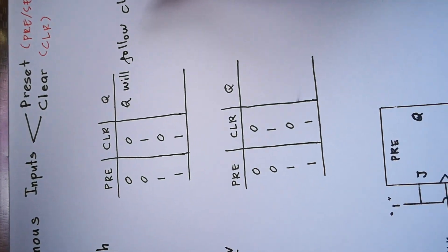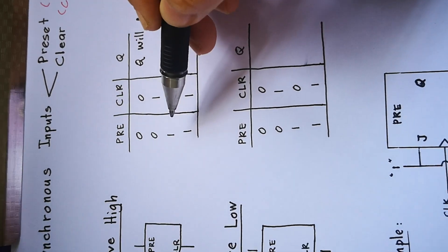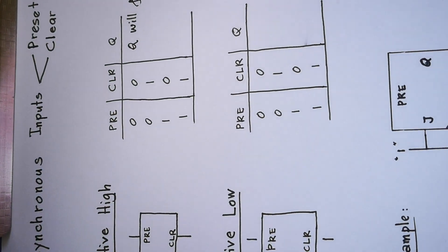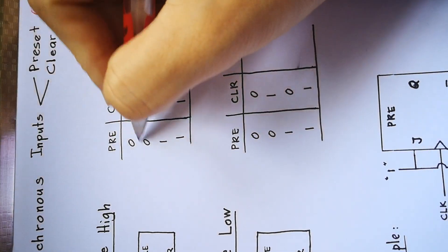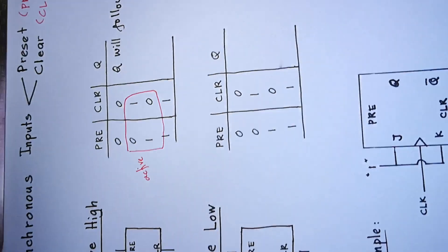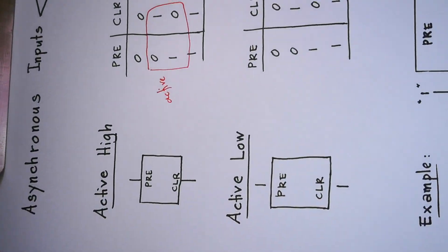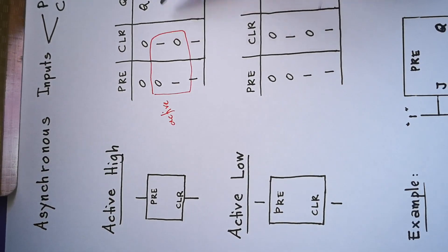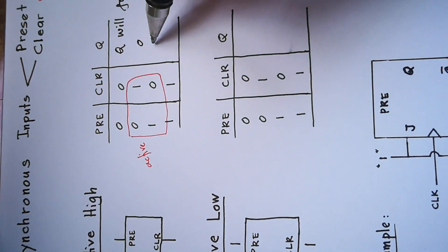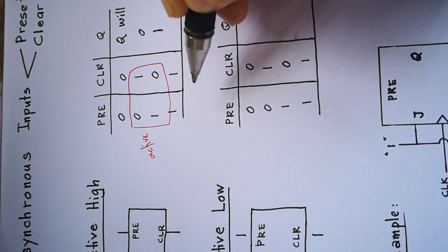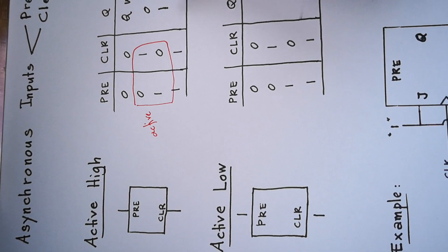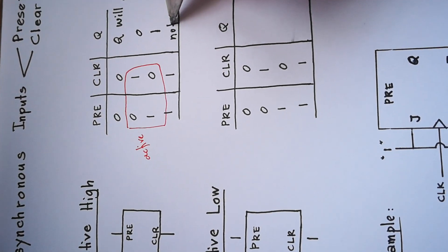Because the pre and clear are not active. Now when pre=0, clear=1, pre and clear become active. For active in active high, 1 means clear is active, so Q will be 0. When preset=1, Q will be 1. And when both are 1, 1 — it will be invalid, so that state will not be used.